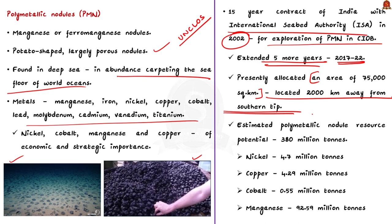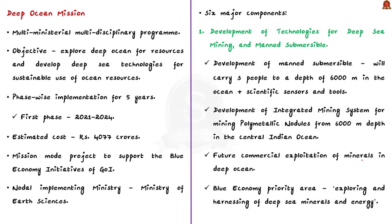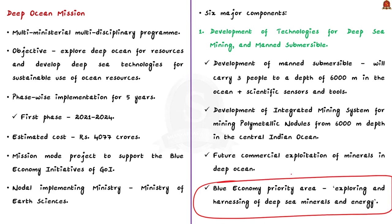In this allocated area, the polymetallic nodule resource potential is estimated at around 380 million tons, containing 4.7 million tons of nickel, 4 million tons of copper, around 0.55 million tons of cobalt, and around 92 million tons of manganese. This makes exploration of polymetallic nodules of greater economic and strategic importance to India. This first component will enable future commercial exploitation of minerals in the deep ocean, and it supports the blue economy priority area of exploring and harnessing deep sea minerals and energy.